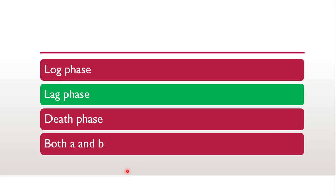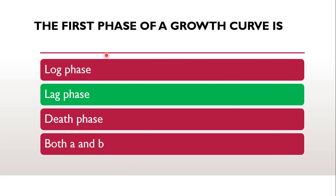The question was: the first phase of the growth curve — it is the lag phase. The correct answer is lag phase, wherein all the cellular activity is there but growth of bacteria is not there. The few cells placed in the nutrient medium will allow the synthesis of proteins and other molecules necessary for replication, but they will not divide — only size will increase.